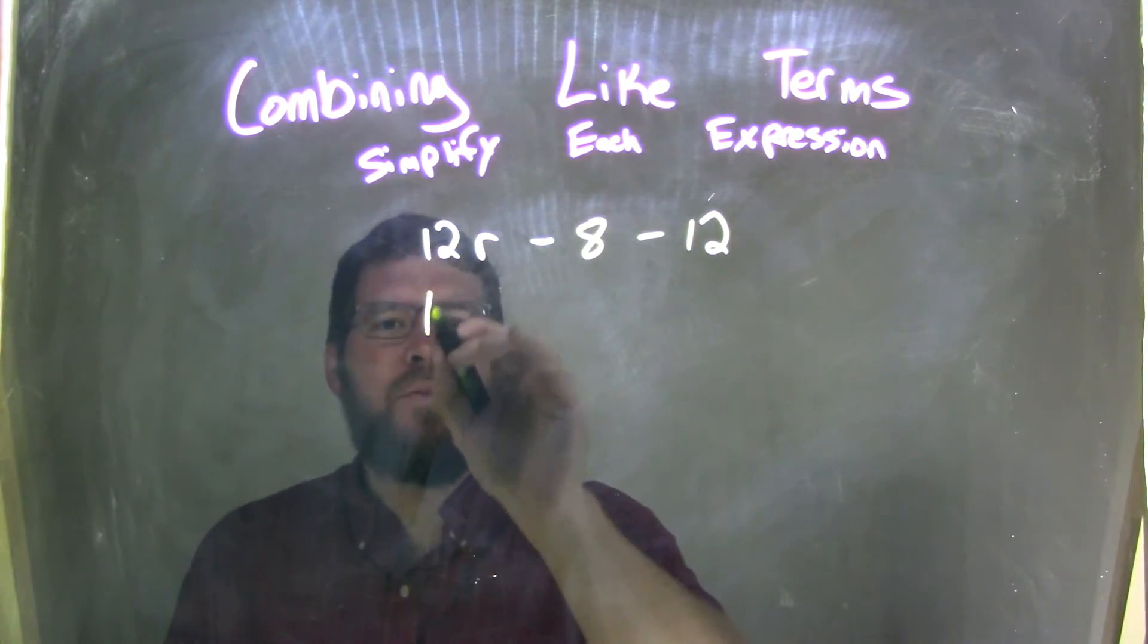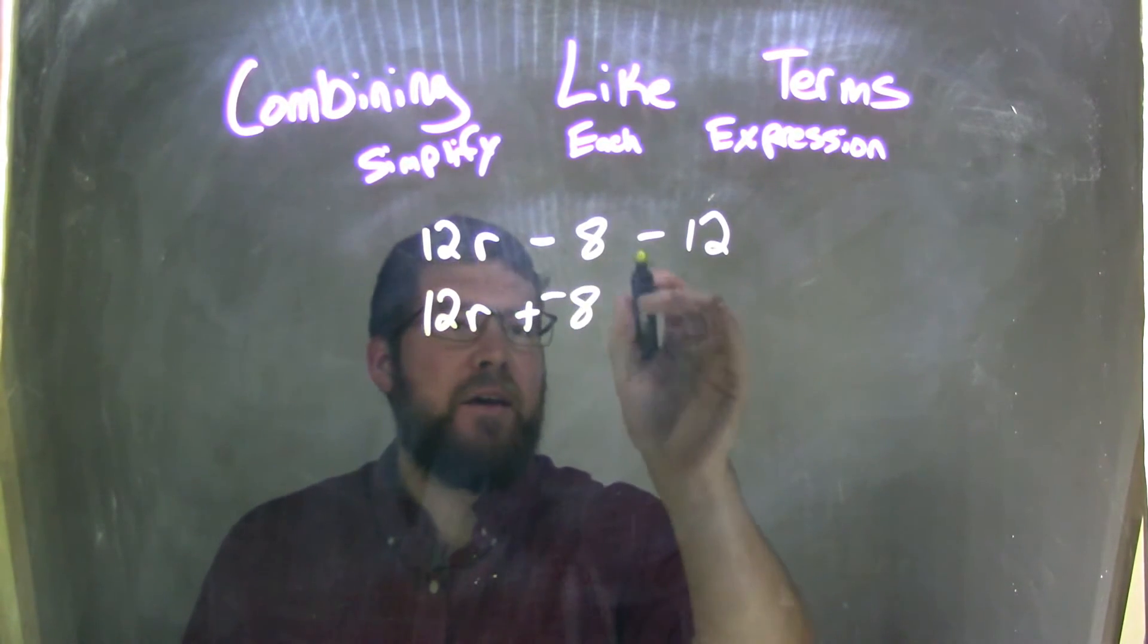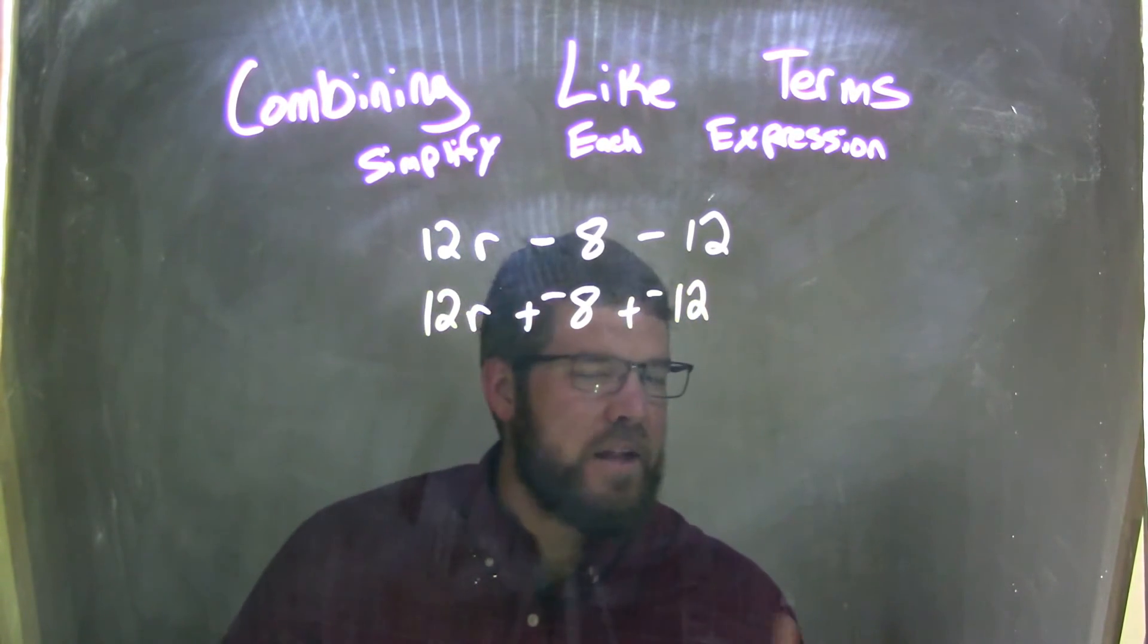So, I'm going to rewrite this to be 12R plus a negative 8, instead of minus 12, plus a negative 12. And this makes it a little easier to see in my mind.